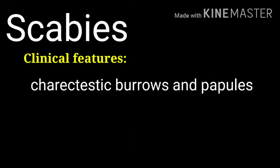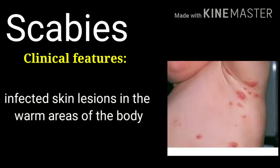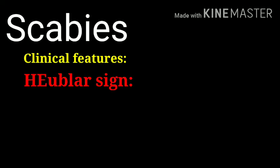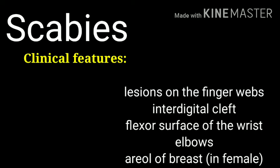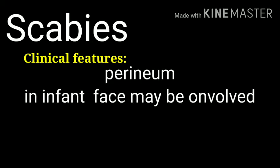Characteristic burrows and papules are present. Infected skin lesions appear in the warm areas of the body, with blood-stained lesions on the finger webs and interdigital clefts, the surface of the wrist, areola of the breast in females, and genitalia. In infants, the face and scalp may be involved.